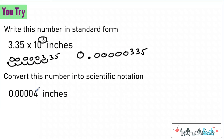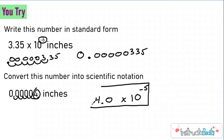Let's take a look at this next one. Your significant digit here is just a four, so you could just have 4.0, and you're going to be multiplying this by a power of 10. You know that you are going to go one, two, three, four, five places, which means this needs to be a negative five, because if I solve this to go back to standard form, I would need to move my decimal place to the left five places. That's why I made that exponent negative.